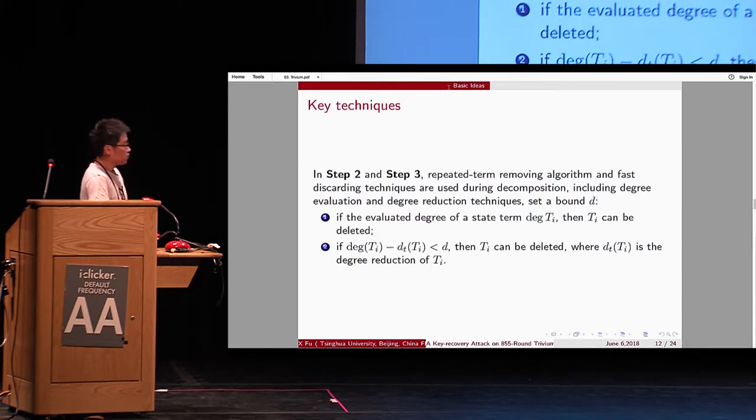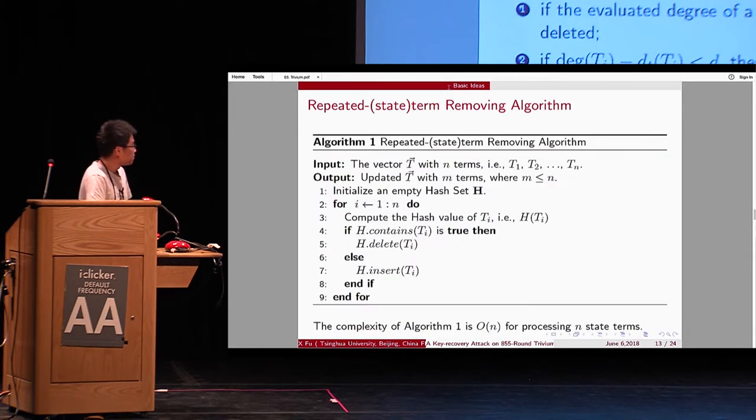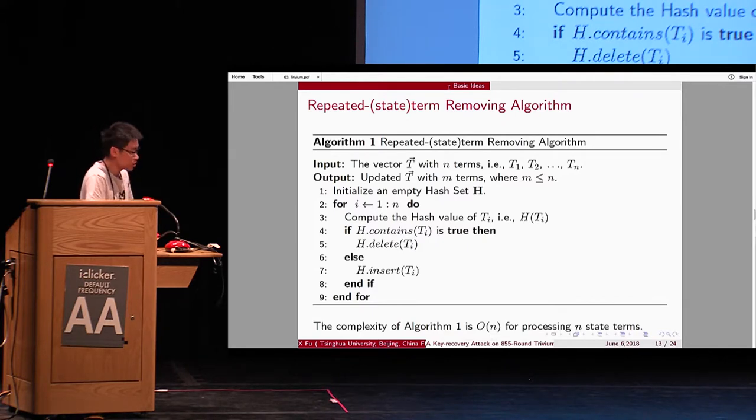Including degree evaluation, degree reduction techniques. For example, in 255, we set a bound d equals to 17. So, during the decomposition, the state terms whose degree is lower than 70, it is removed. So, we only care that state terms whose degree is higher than 70. This is an algorithm when we remove the repeated state terms. We use the hash table, and the complexity of algorithm is linear with the state terms.